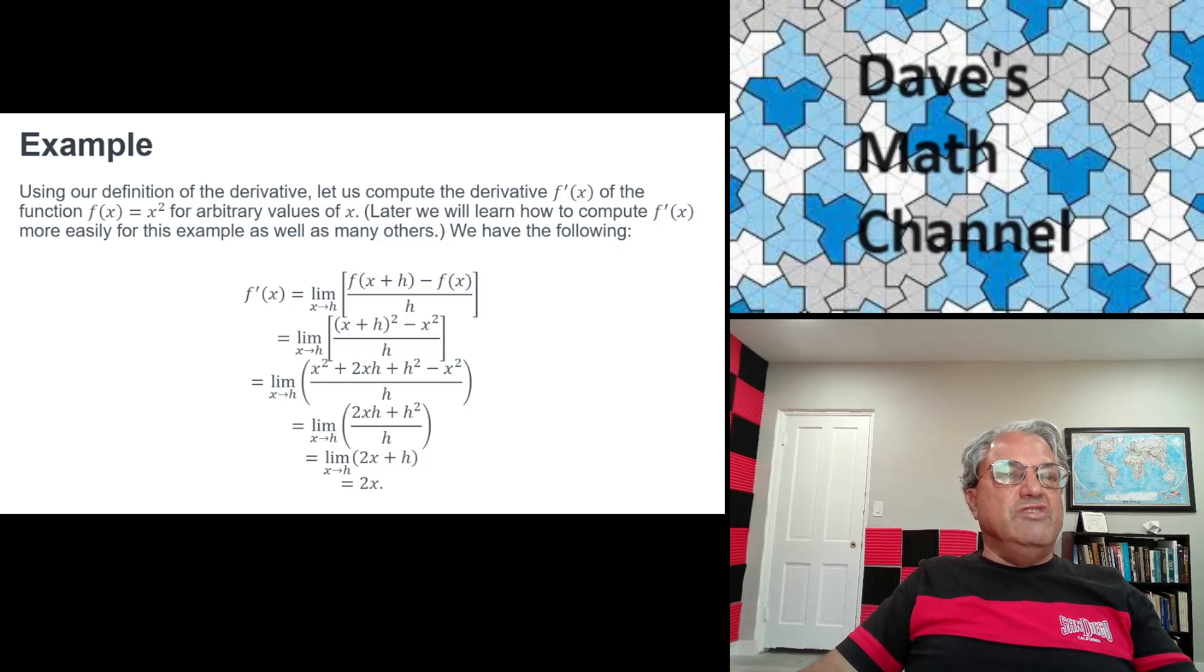You can also think of the derivative, you don't have to think of it as a slope at a particular point. You can think of it as another function. It's a function whose value is the slope at every point. So that's what we're doing here. We're calculating f prime of x using the definition in terms of limits. So let's just do it. So here's the definition. f prime of x is equal to the limit as h goes to 0 of the ratio f of x plus h minus f of x over h.